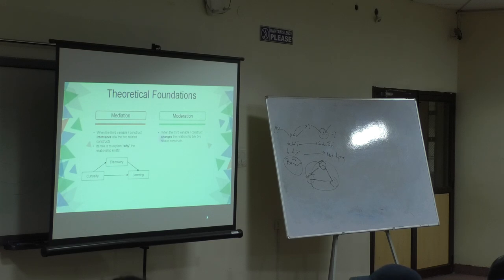Now moderation. When the third variable changes the relationship. It gives context to the effect. Same example of curiosity leads to learning. Here, distraction. If you see the difference between both the diagrams, the only difference is that there is no correlation between the third variable and the independent and dependent variables.